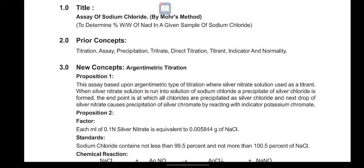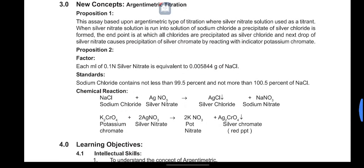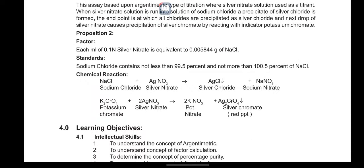With the addition of silver nitrate, silver chromate reacts with the indicator potassium chromate. Silver chloride is formed, and the reaction is: sodium chloride plus silver nitrate gives silver chloride plus sodium nitrate.